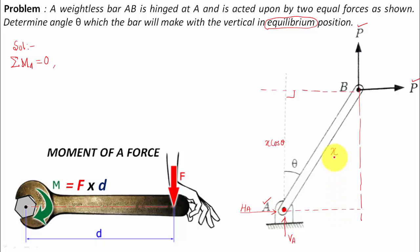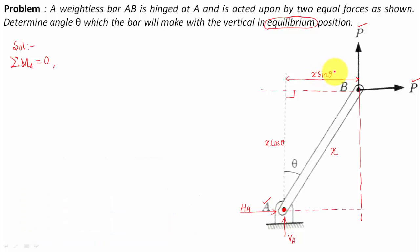Now for the vertical force: if we extend its line of action and drop a perpendicular from point A, given that the bar length is x and the horizontal projection is x·cosθ, then the perpendicular distance from A to the line of action of the vertical force is x·sinθ. So we have the two forces and their perpendicular distances with respect to point A.